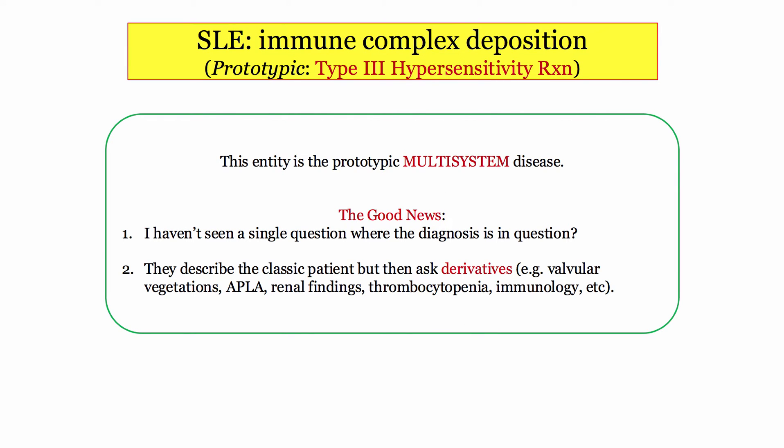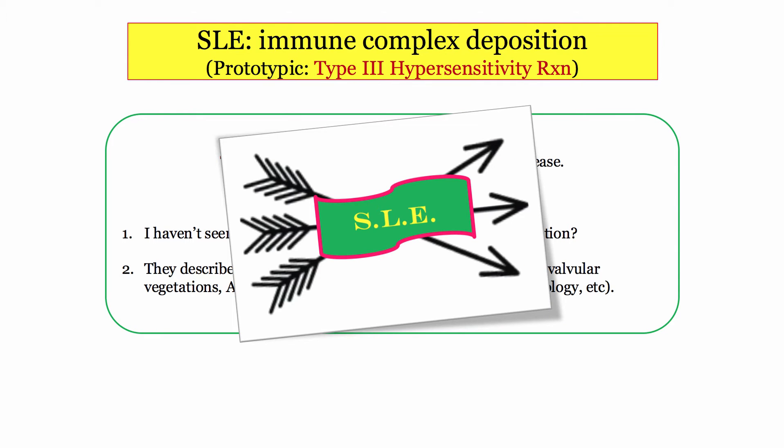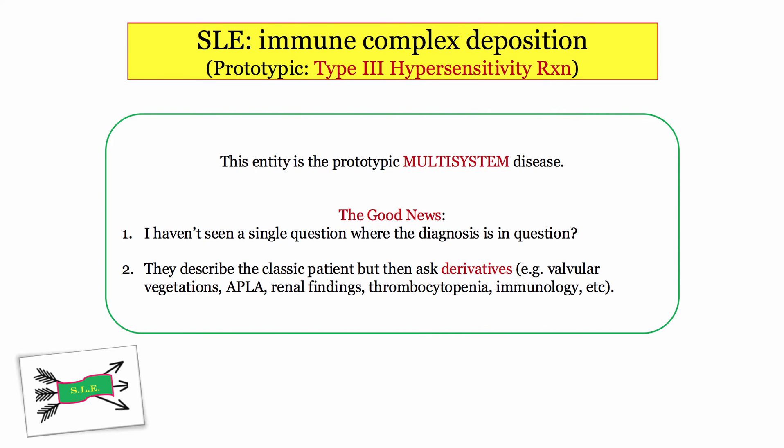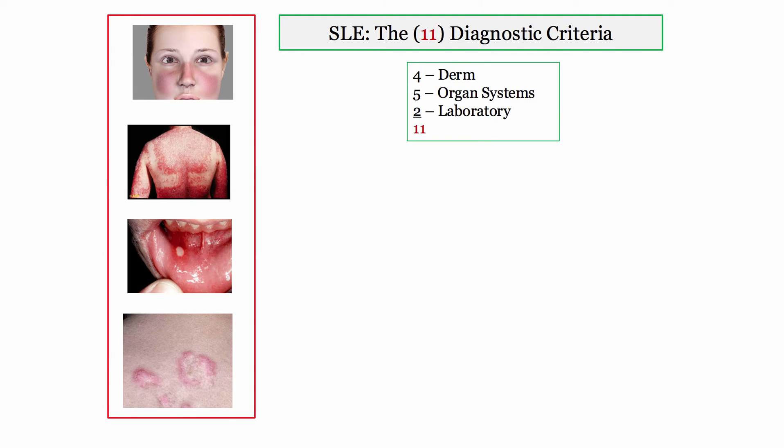SLE is also the prototypic multi-system disorder. The good news is you will never struggle to make the diagnosis. On the boards, patients with SLE come in with big tattoos that say SLE — the diagnosis will be obvious. We'll review the criteria, but the real value will be with the derivatives.